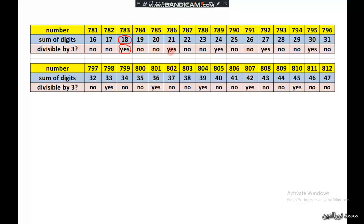We continue checking the remaining numbers to find which ones are divisible by 3. We mark yes where a number is divisible by 3, and those are the numbers that are divisible by 3, between 781 and 812.